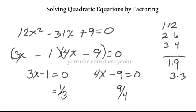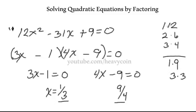So one solution is x = 1 third and the other is x = 9 fourths. Sometimes instructors prefer a different notation, but these are valid solutions. Both are solutions to our quadratic equation. When you set each factor equal to 0 and solve, you find the values of x that satisfy the original equation.